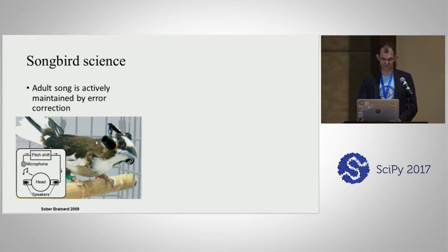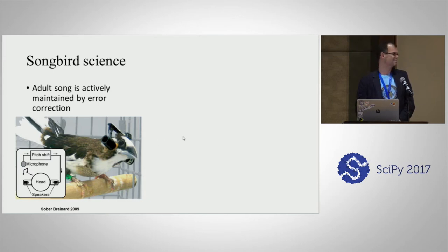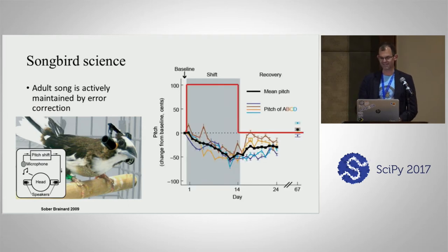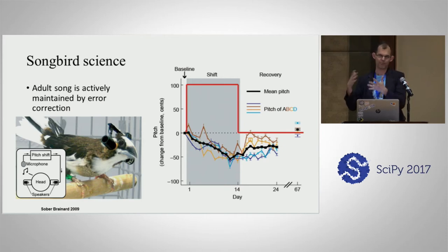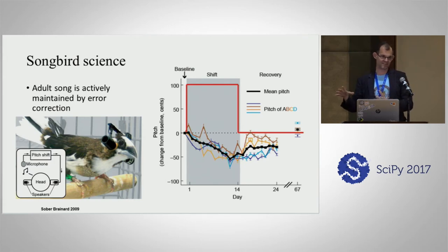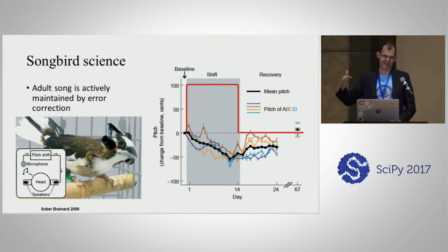This is a similar experiment — these are tiny bird headphones. It's mandatory that we include this image in any talk about our lab. That device shifts the pitch of the bird song in real time, so we auto-detune the bird. If you shift the pitch up, the bird over a number of days will sing lower — it's actively using sensory feedback to match its output to its expected template, and it'll correct if those don't match up.